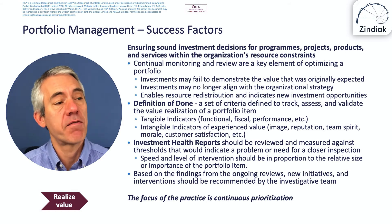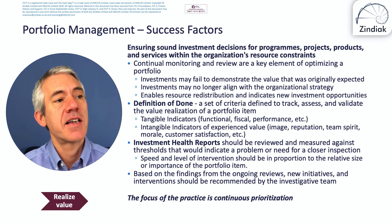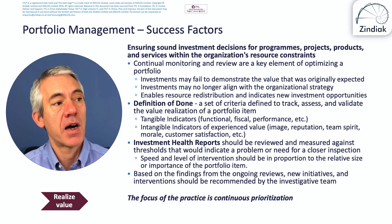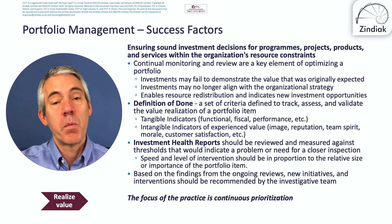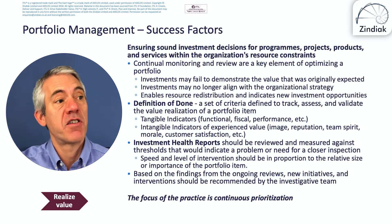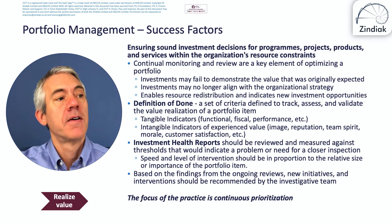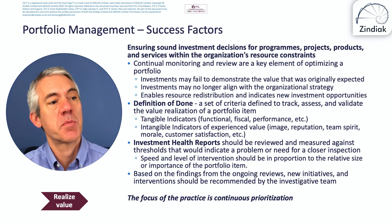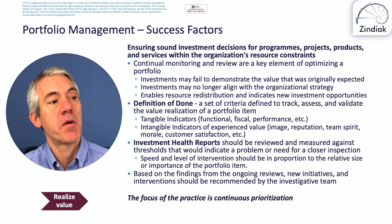Definition of done — from agile — is a set of criteria defined to track, assess and validate the value realization of a portfolio item. When we deliver something, what's the definition of done? How do we know it's complete, finished, done? So tangible indicators — functional, fiscal, performance — and intangible indicators of experienced value such as image, reputation, team spirit, morale, and customer satisfaction. If we're using those, how do we measure them?